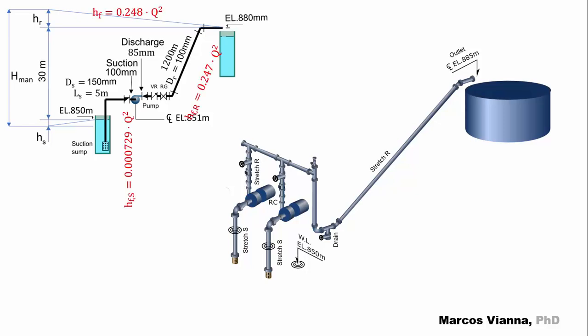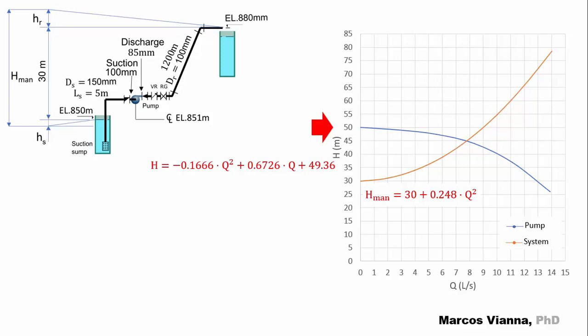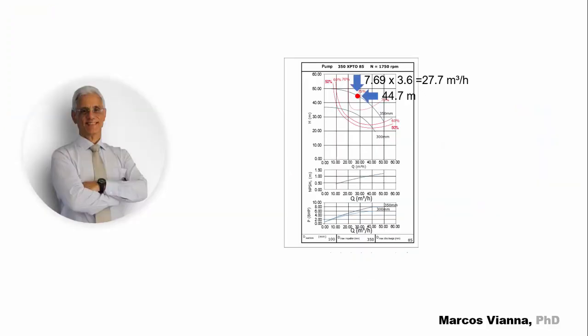Here are the head losses equations that occur in the systems. They were derived in another video of this channel. Its link is in the description. And now, here is the equation of the pump when we consider the 350 mm diameter impeller. When we put these equations together, we find this second degree equation, which allows us to find the coordinates of the operating point. Here is the point in the pump chart. Notice that the flow was converted to cubic meters per hour.